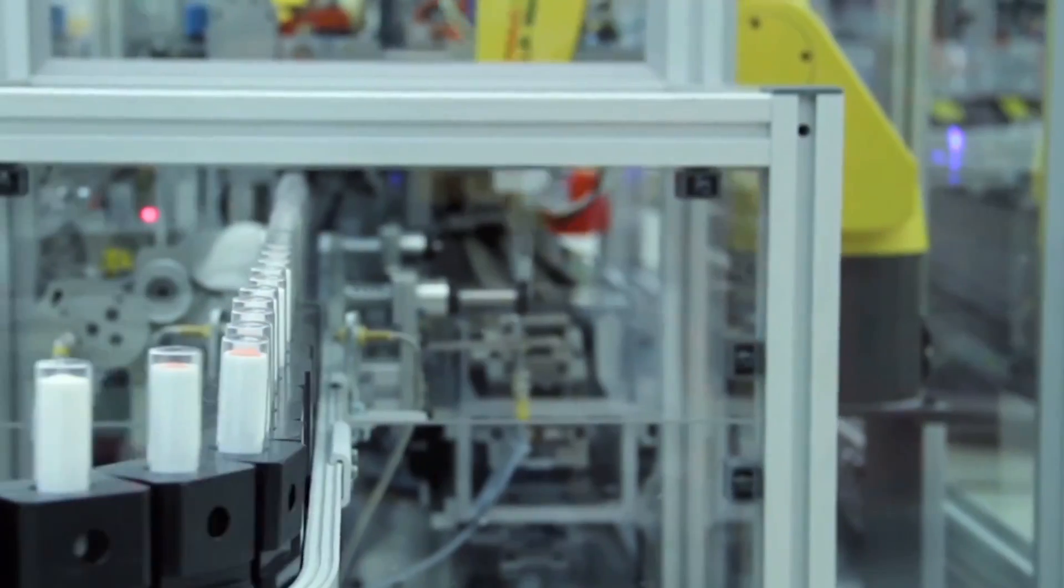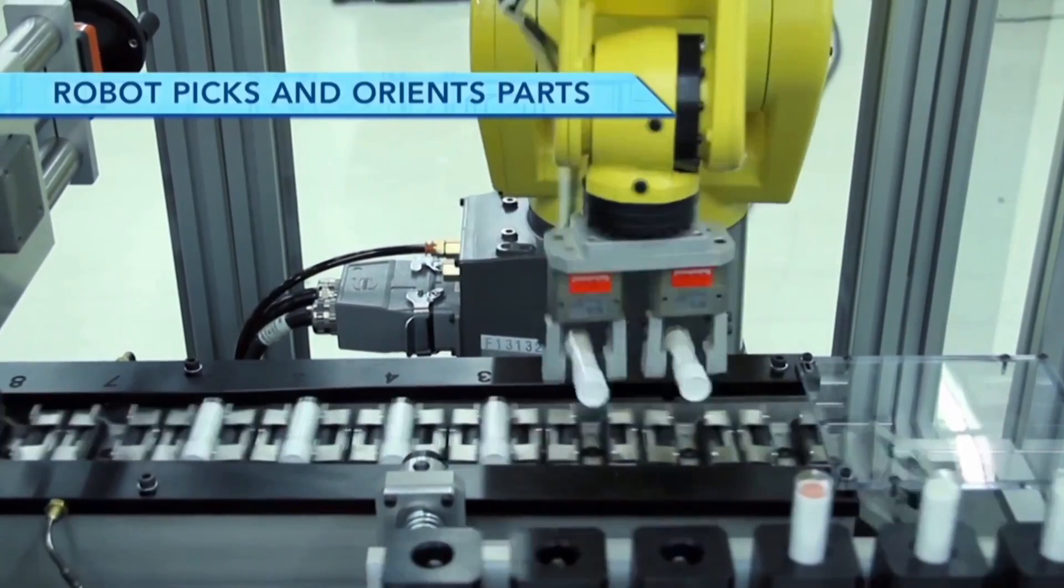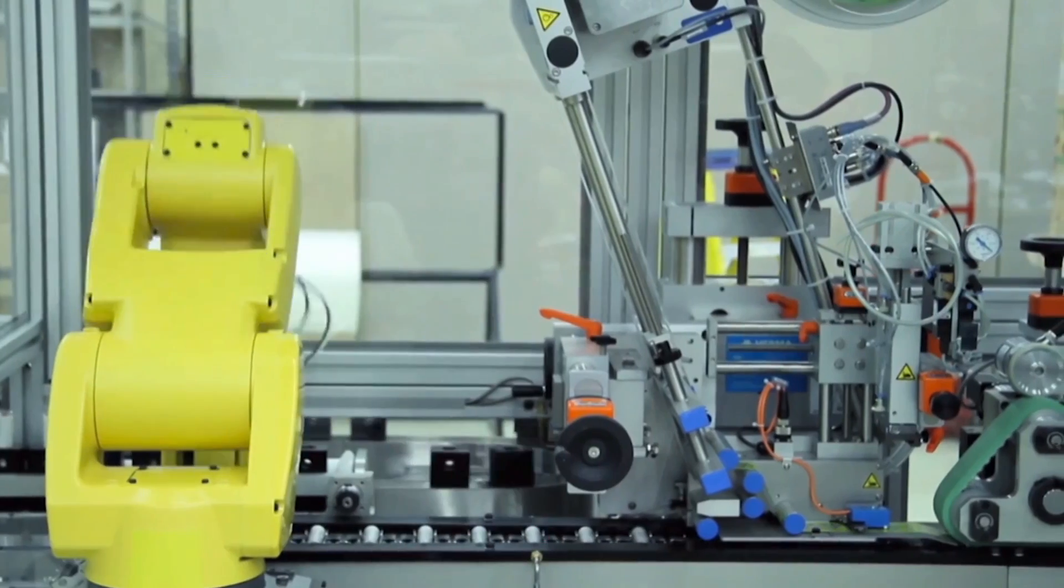The system seen here was designed and built to load and unload cosmetics products at 40 parts per minute, but can be modified for up to 100 parts per minute.